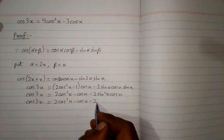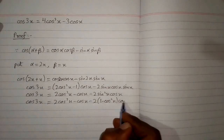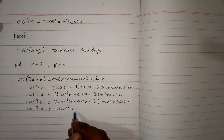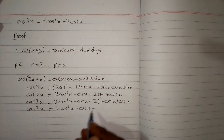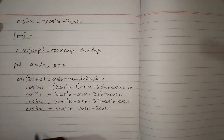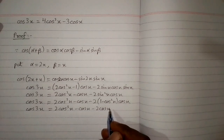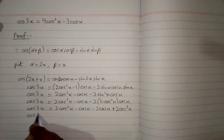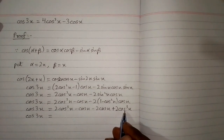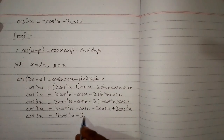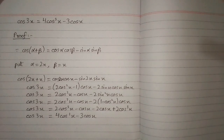So cos 3x is equal to 2cos³x minus cos x minus 2, and in place of sin²x we can put 1 minus cos²x. So we have cos 3x equal to 2cos³x minus cos x, minus 2 times cos x is minus 2cos x, and minus 2 times minus cos²x gives plus 2cos³x. Adding 2cos³x and 2cos³x gives 4cos³x, and minus cos x minus 2cos x is minus 3cos x. This gives the required identity: cos 3x = 4cos³x minus 3cos x.